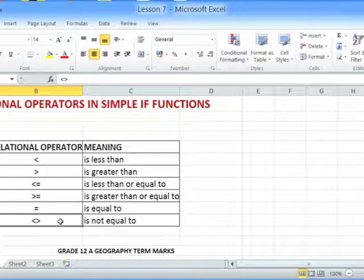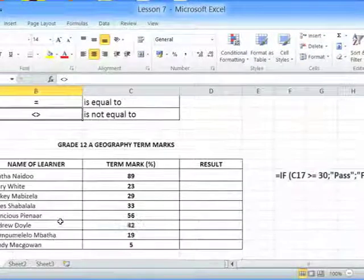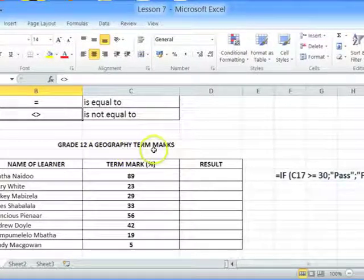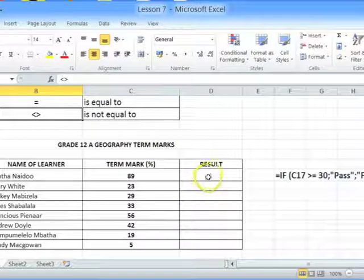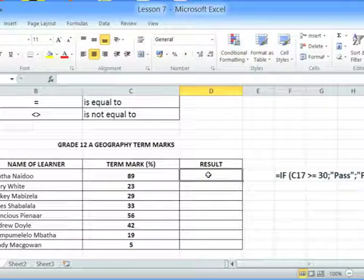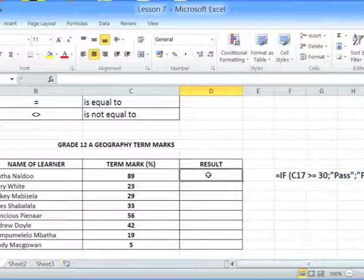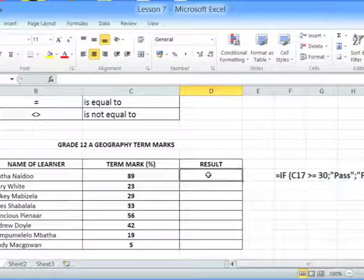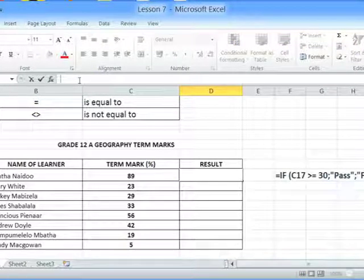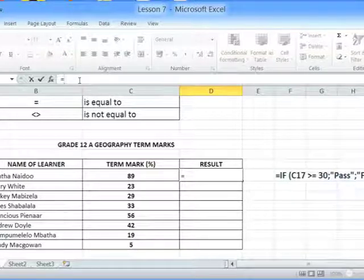In our example that we are going to look at, we're looking at the Grade 12A Geography term marks, and we are going to put a result whether the learner has passed or failed. So in cell D17, I'm going to put in a formula. Remember, all formulas must start with an equal to sign.